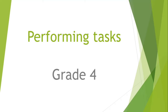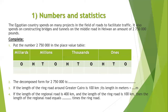Performing tasks for grade 4. Numbers and statistics. The Egyptian country spends on many projects in the field of roads to facilitate traffic. It also spends on constructing bridges and tunnels on the middle road of Helwan, an amount of £2,750,000.